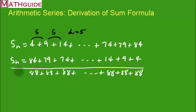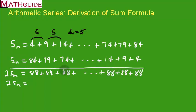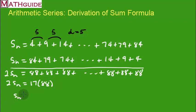What I did here is I added down — I took one series and added it to the same series, so I really have two series now. How many 88s are there? I found out there are 17 of them. Since there are 17 of these 88s, that equals two sums, and I only want one sum, so I'm going to divide both sides by two.